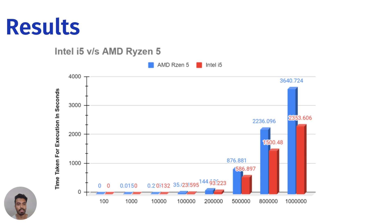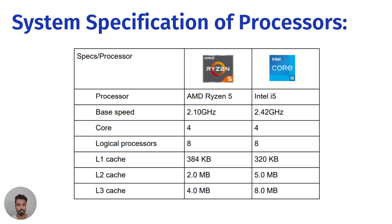We compared the results of Intel i5 and AMD Ryzen for different amounts of integers starting from 100, 1000, 1 lakh, and so on. The L2 cache of Intel Core i5 is 5.0 MB, which is greater than the 0.2 MB of Ryzen, and its L3 cache is 8.0 MB, which is greater than the 4.0 MB of Ryzen.